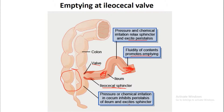Once food enters the cecum, the food particles inside the cecum exert pressure and chemical irritation on the cecal mucosa. This inhibits peristalsis of the ileum and excites the sphincter, causing it to contract and close. That is how emptying at the ileocecal valve is regulated.